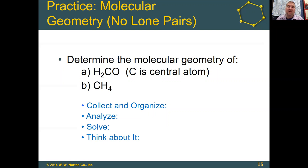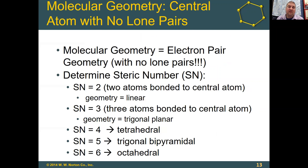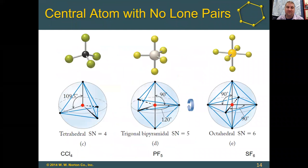So again, we've got linear, trigonal planar, tetrahedral, trigonal bipyramidal, and octahedral as our electron geometries for steric numbers of two, three, four, five, and six.